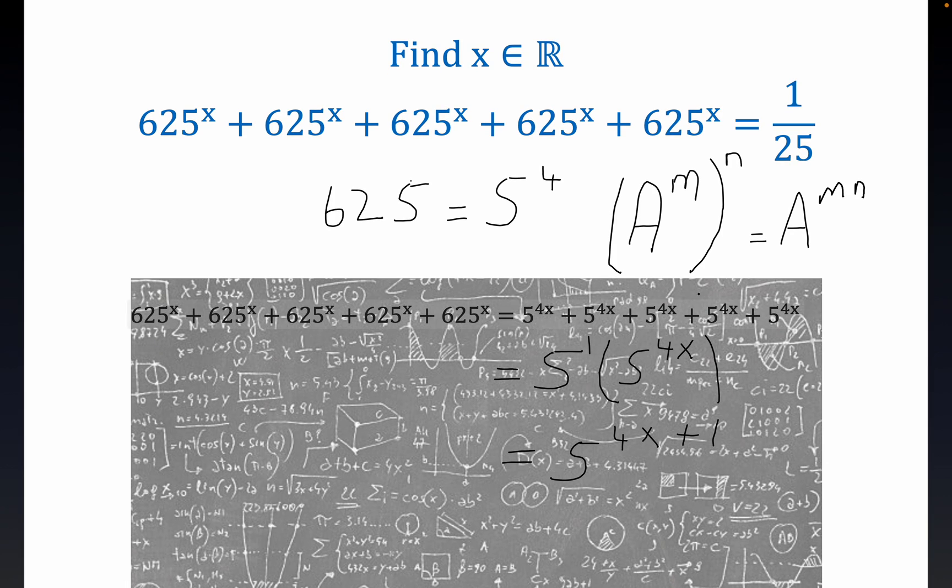Now remember, what is the original problem? It's equal to 1 over 25, but remember this is just 5 to the minus 2, another property of exponents. So we're going to equate this to 5 to the minus 2 just because it's convenient.